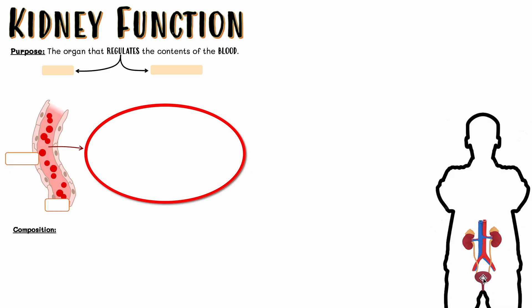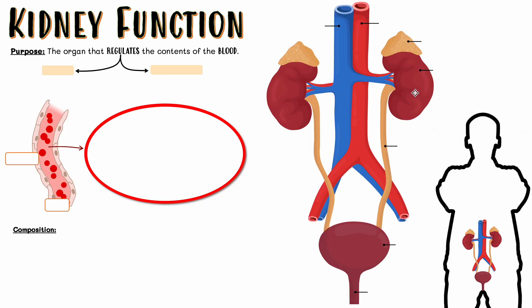Let's zoom in and see everything nice and clear. The first thing to notice is that the urinary system is not just the kidney — there are many other structures, but the kidney is the key part we really care about. The kidney is like a little bean shape and we've got two of them, one on the left and one on the right. They're located towards your lower backside, which is why kidney disease can cause lower back pain.